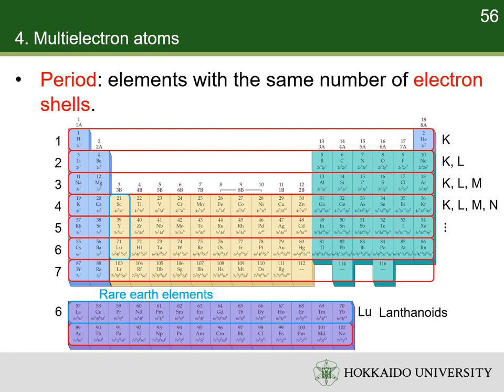Lanthanoids, scandium, and yttrium are also known as the rare earth elements. Period 7 contains 32 elements, including elements from number 89 (actinium) to number 102 (nobelium) in the f-block. Elements from number 89 (actinium) to number 103 (lawrencium) are also known as actinoids. All the elements of period 7 are radioactive.